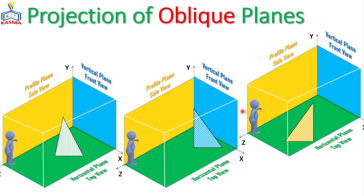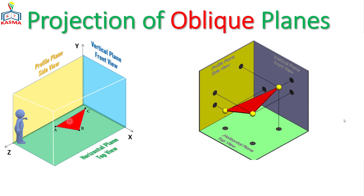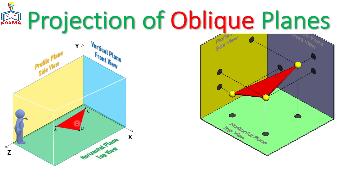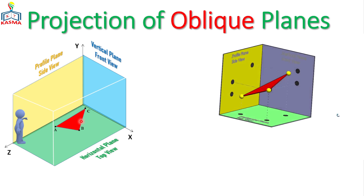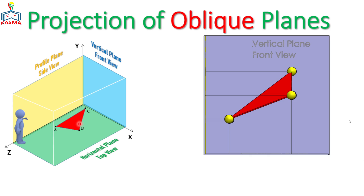When this oblique plane is placed on a standard coordinate system, let's see what its projections look like from different views. Looking from the front side, its projection will be on the vertical plane. When projected, the three points will be placed on the vertical plane — creating projections AF, BF, and CF, which are the front views of each point. Once connected, you will get this foreshortened plane.